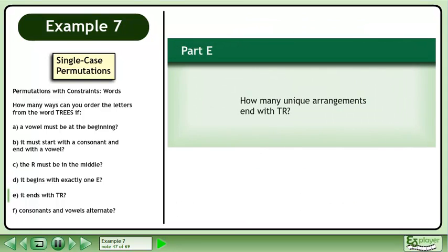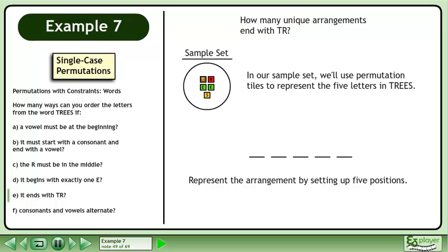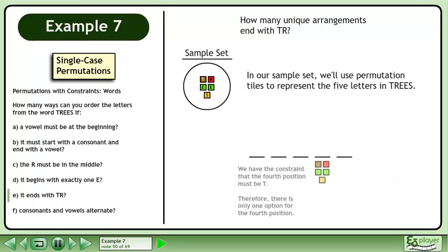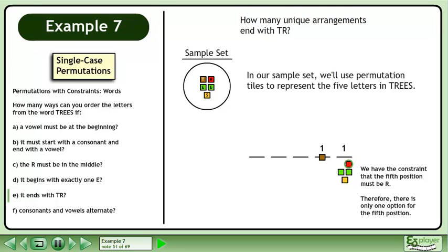In Part E, how many unique arrangements end with TR? In our sample set, we'll use permutation tiles to represent the five letters in TREES. Represent the arrangement by setting up five positions. We have the constraint that the fourth position must be T, so there is only one option for the fourth position. We have the constraint that the fifth position must be R, so there is only one option for the fifth position.